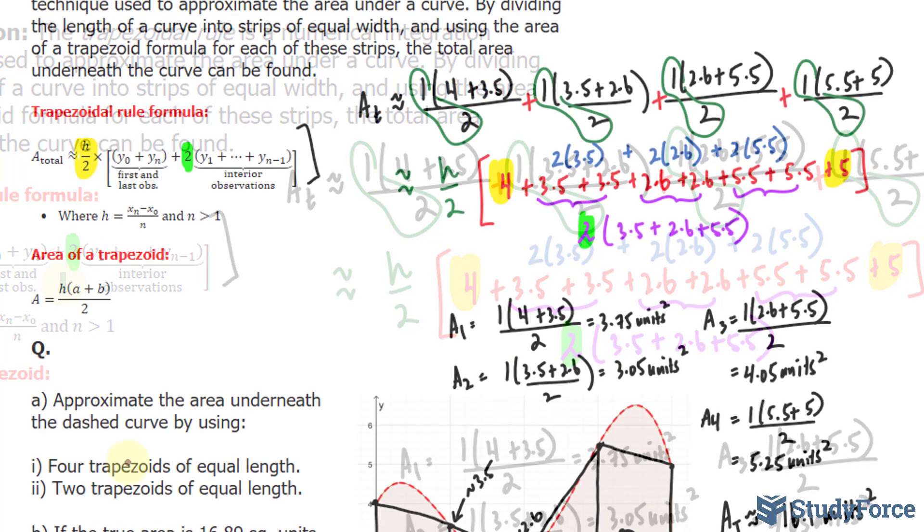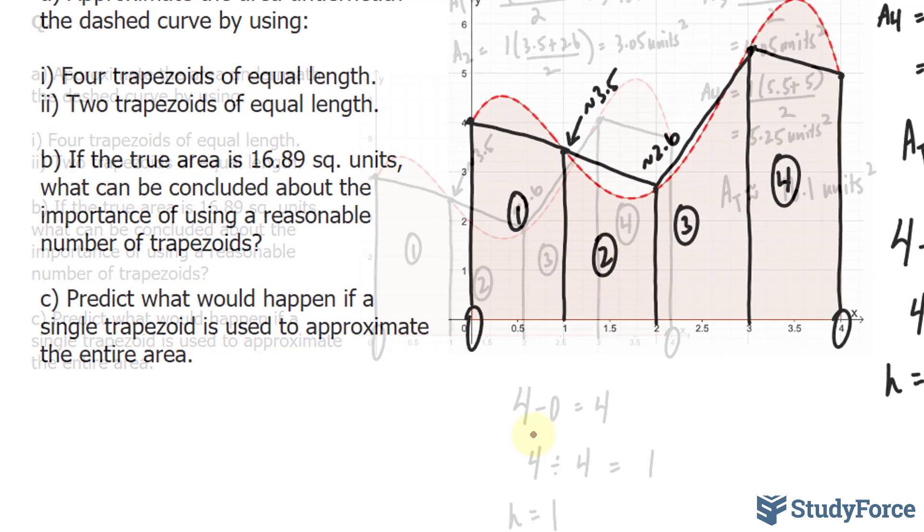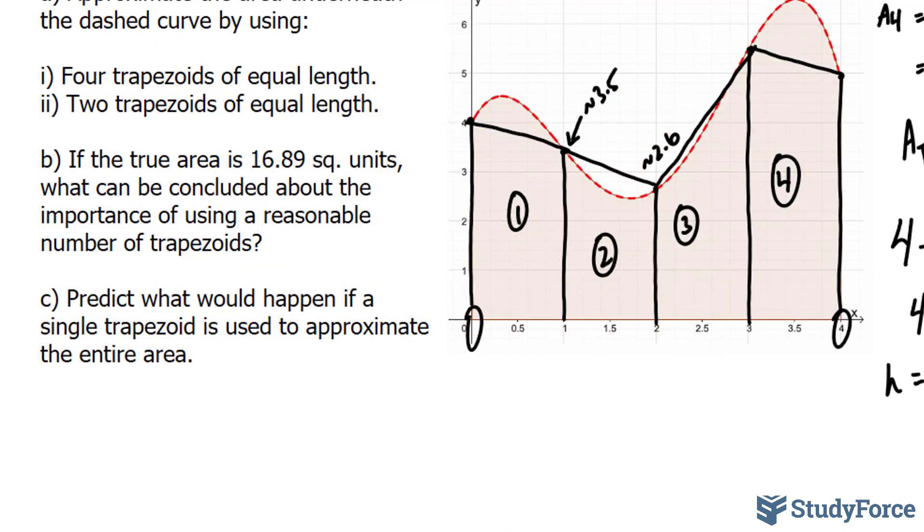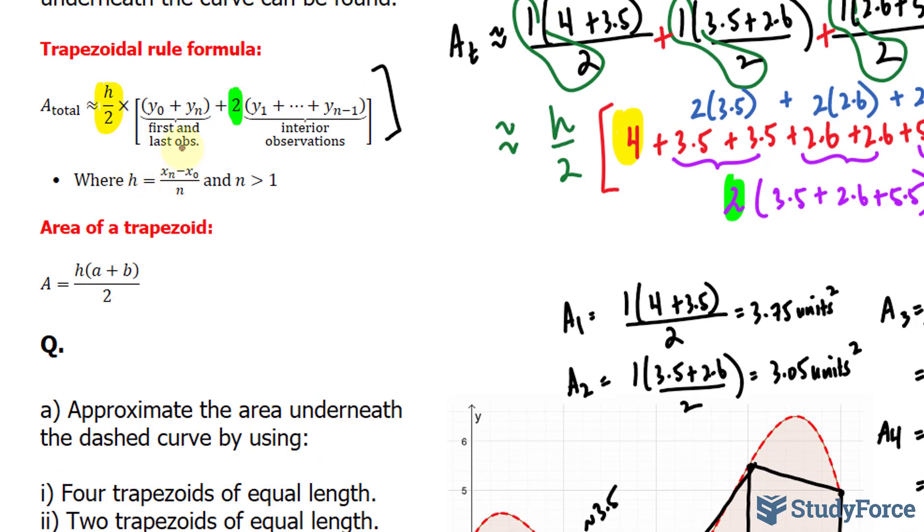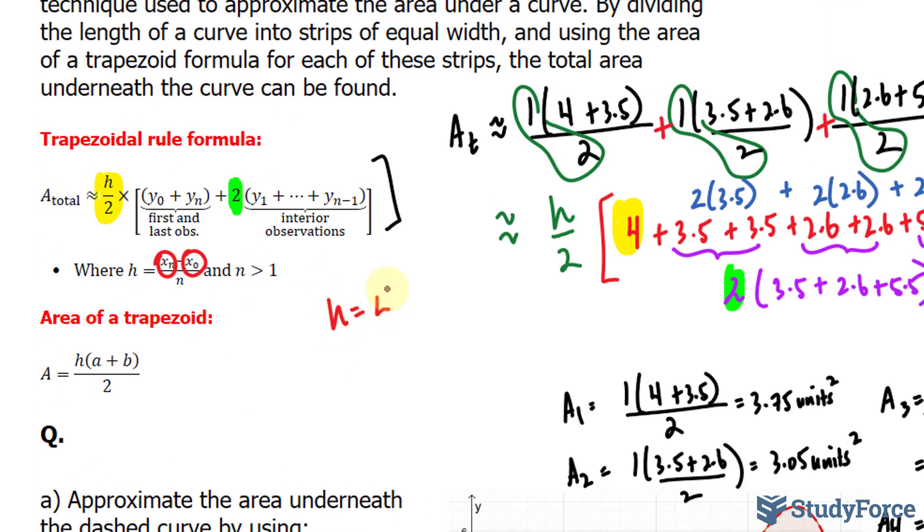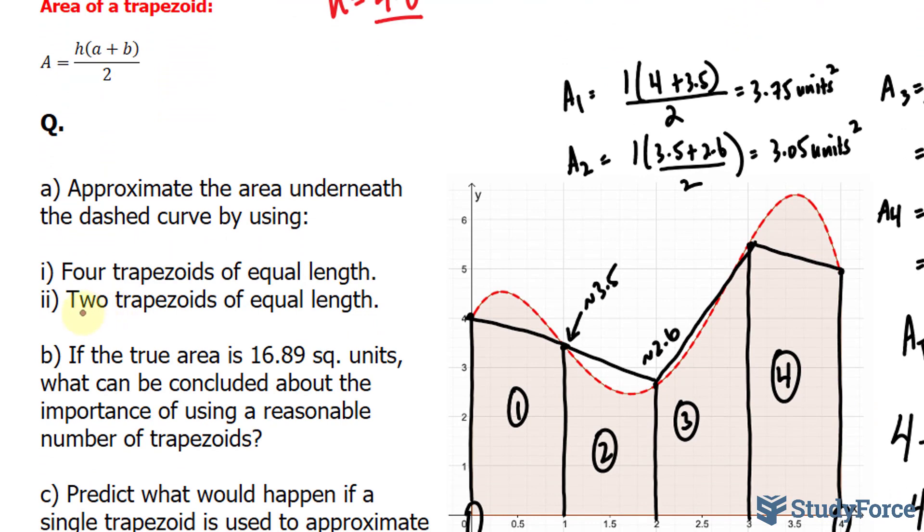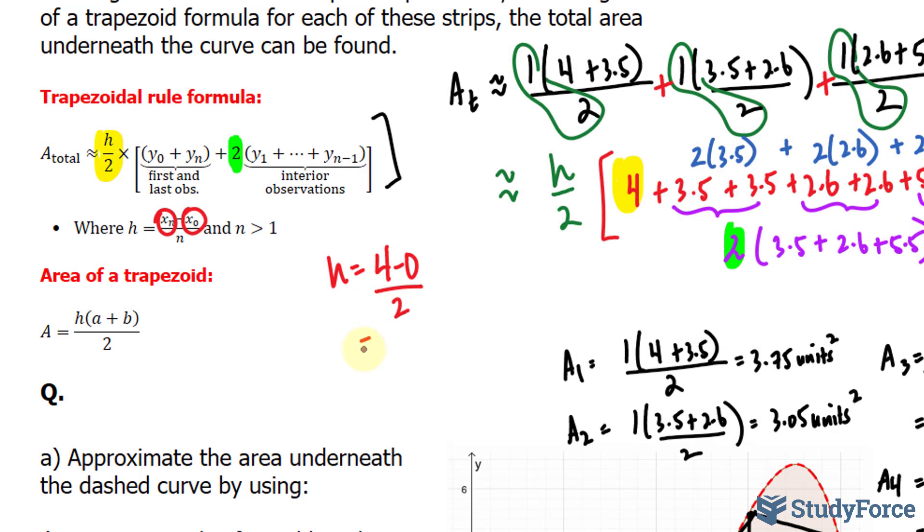Now, rather than redoing the second part of this question using this elaborate method, let's use the trapezoidal formula instead. And the very first thing, just as before, is we want to find out what h is equal to. According to the formula, h is equal to x sub n minus x sub 0 over n. This means the last observation along the x-axis, and that means the first observation along the x-axis. So for us, it was 4 minus 0. We'll write down h is equal to 4 minus 0. And n represents the number of trapezoids we want to use to approximate the area. And they're specifically asking for 2, so n is equal to 2. Therefore, h is 4 minus 0, which is 4 divided by 2. And now our common h value is 2.